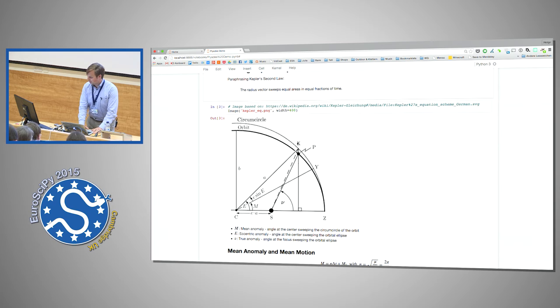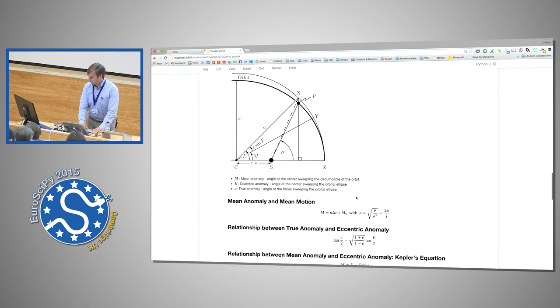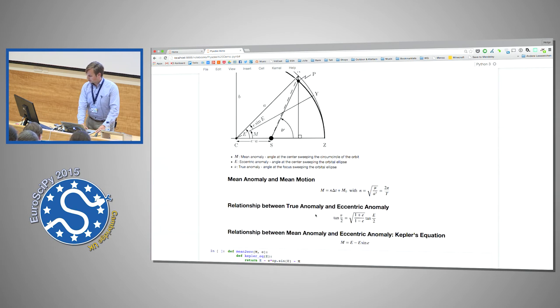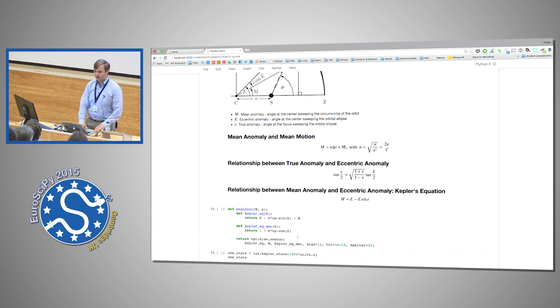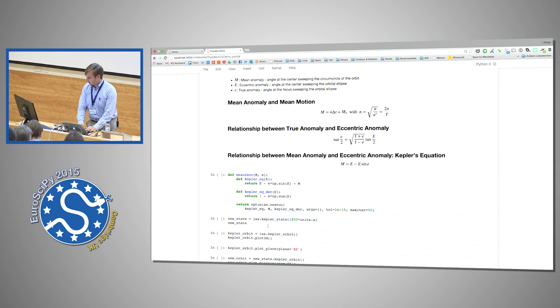And the eccentric anomaly which is also at the center and sweeping the orbital ellipse. And the good thing about the mean anomaly is that it increases linearly with time. So on the ellipse the other two angles, the angular velocity is changing. But with the delta t we can directly determine the mean anomaly. And there's a relationship between the true anomaly and the eccentric anomaly. And then there is a relationship between the mean anomaly and the eccentric anomaly which is Kepler's equation. And now we're screwed because we can't solve that analytically. Except we're not because Python to the rescue. We use the Newton-Raphson method from SciPy and we get a numerical solution. So half an hour into the future and we get a new state for the ISS.